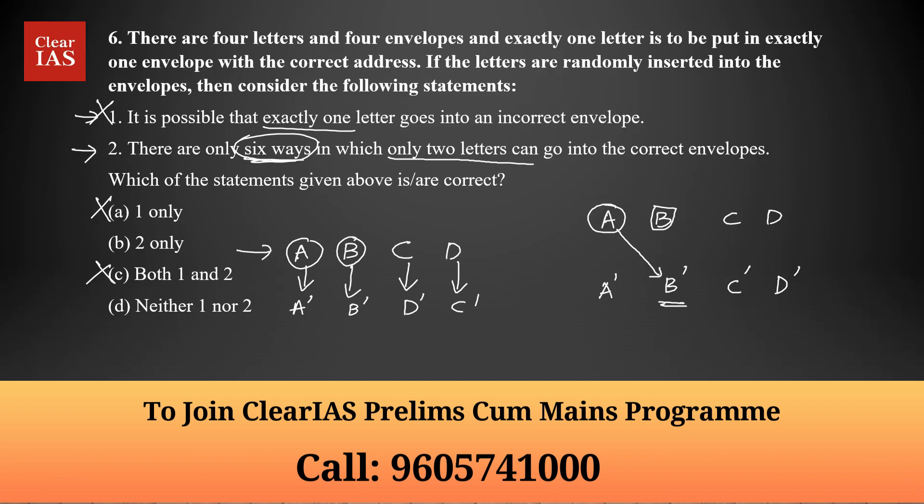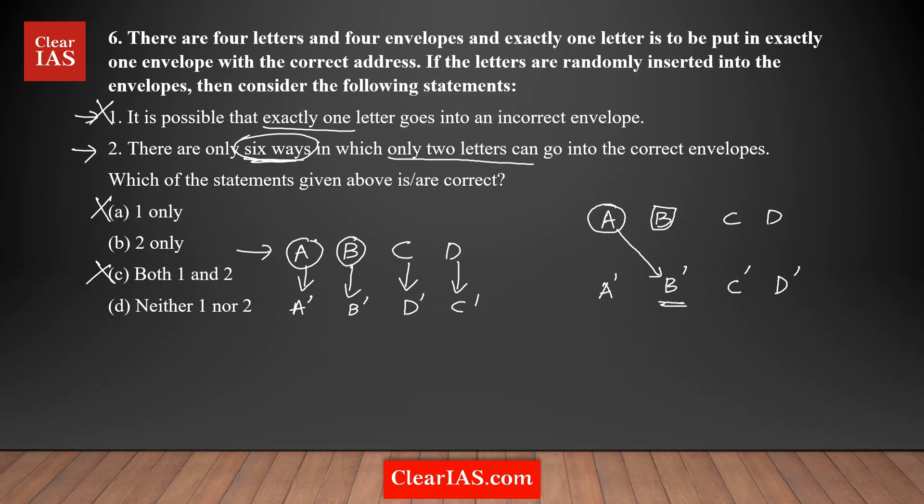This is one scenario, where A and B is going to the correct envelope. But any two letters can go to actually the correct envelope. Any out of four letters, any two of them. So one case is A, B. So just need to count how many different possible scenarios are there. Case one is A and B are going to the correct envelope. As we discussed here, it's also possible that A and C can go to the correct envelope. Also, I can say A and D. There are three cases here.